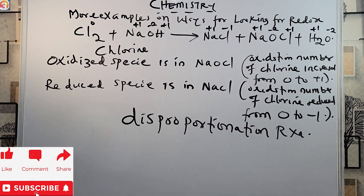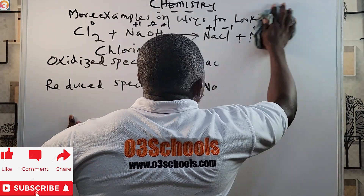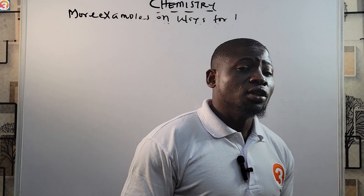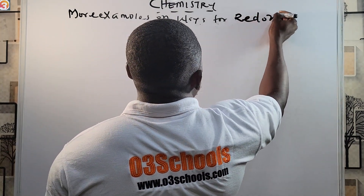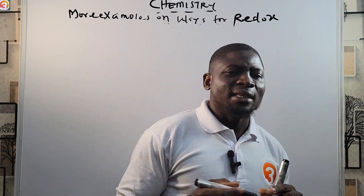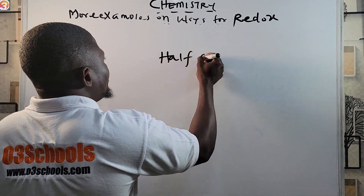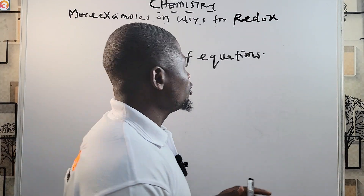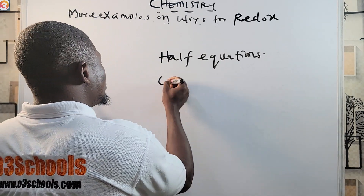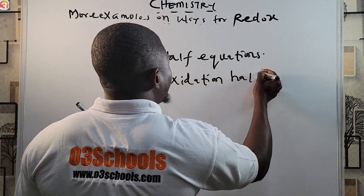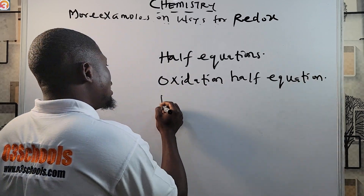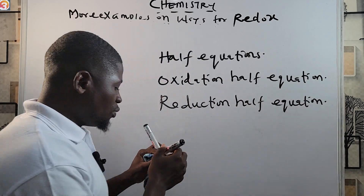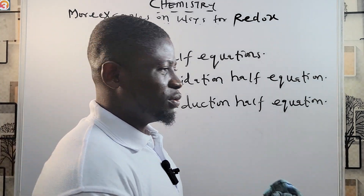A redox reaction may be divided into two parts. We call those two parts half equations. We can have the oxidation half equation and the reduction half equation.